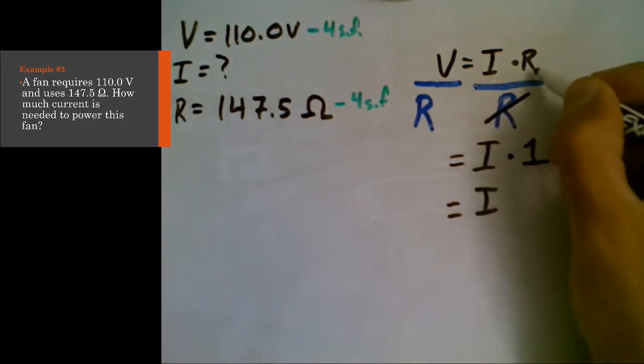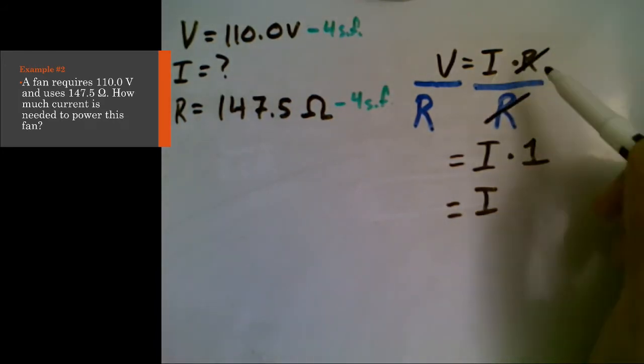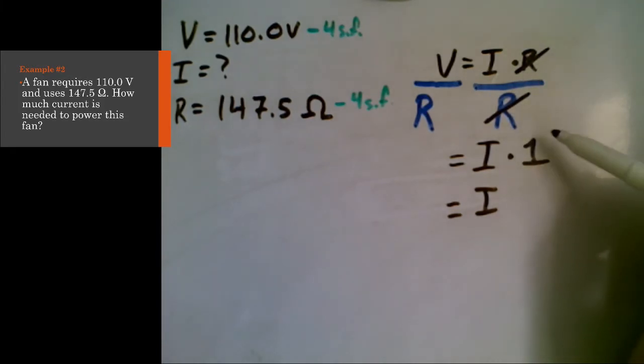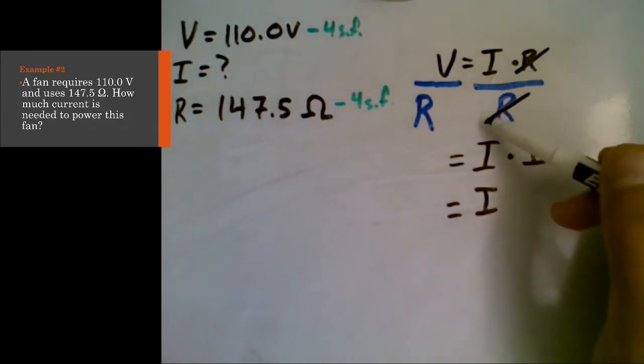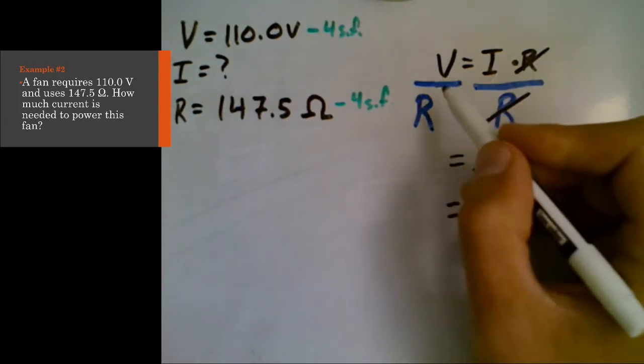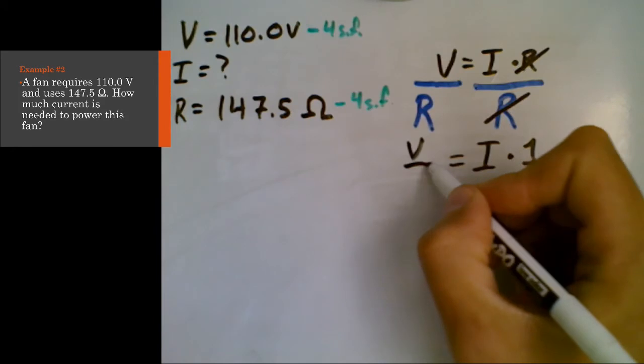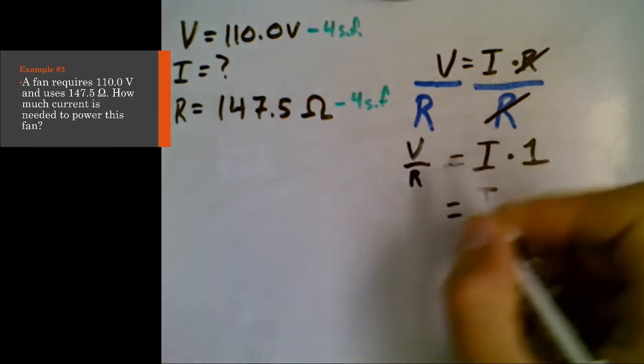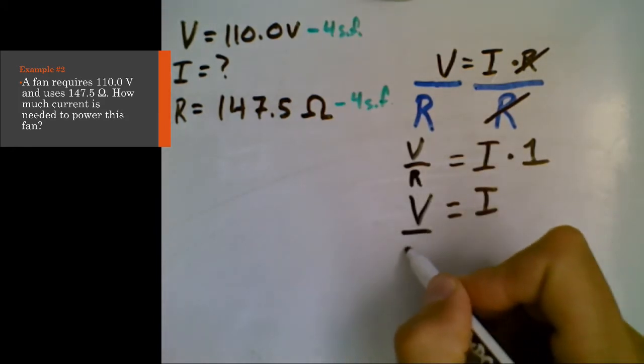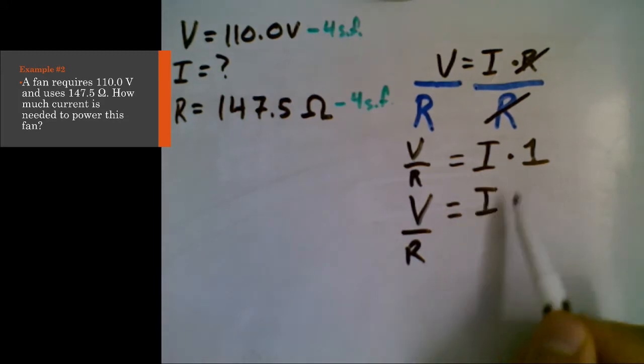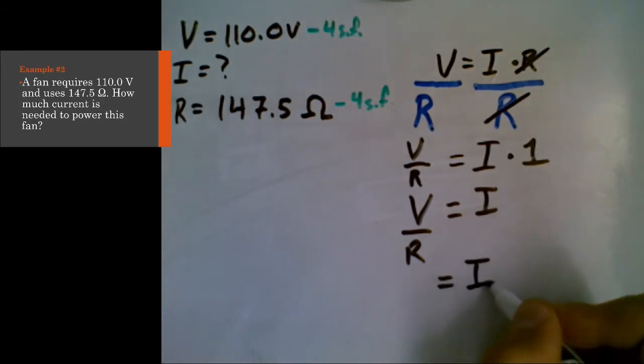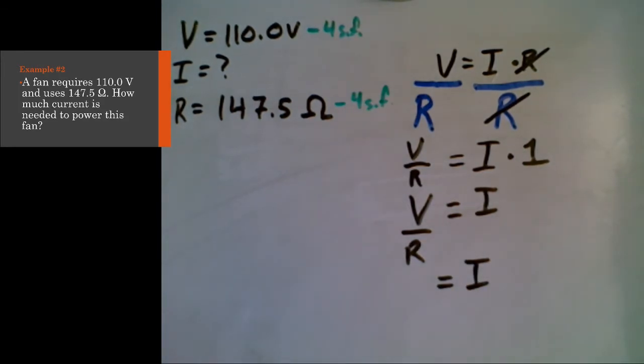So you often see teachers cancel this out. And that's actually what they're saying when they're crossing this out. They're saying dividing that is going to be equal to one, and anything multiplied by one is itself. So I can just get rid of that thing. But on the other side, we can't do any canceling because we have V divided by R. So that's actually what our equation comes out to be. The current is the same as V divided by R.